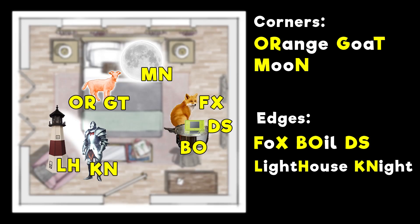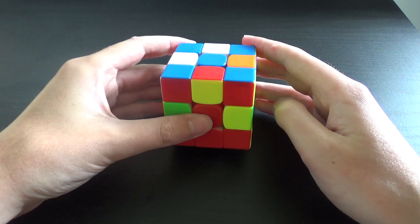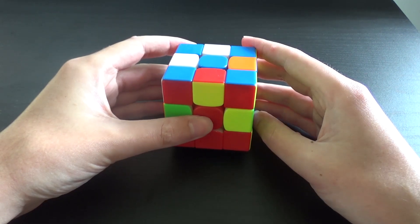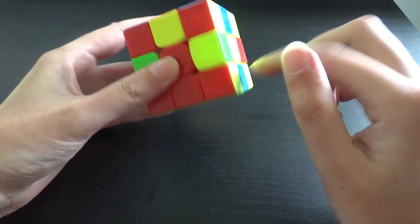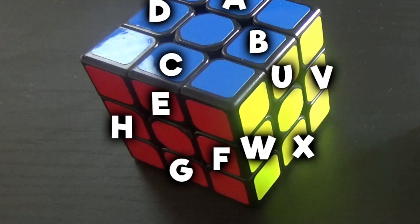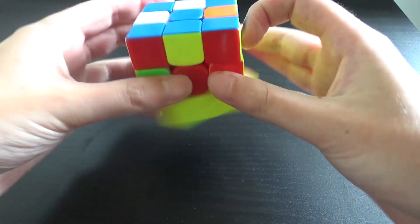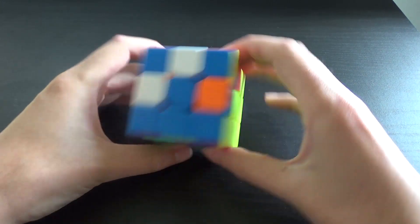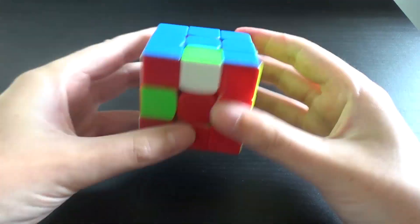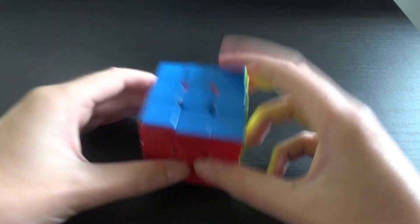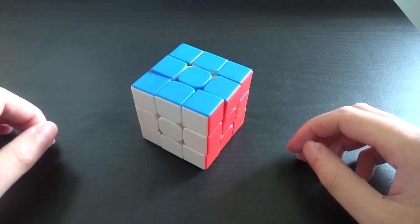So the first word for edges was fox meaning the first two letters are FX. So it's these two pieces and I don't have to see because I just know that F is here and X is here. So do the algorithm that solves those two pieces and then, and that is a solved cube.